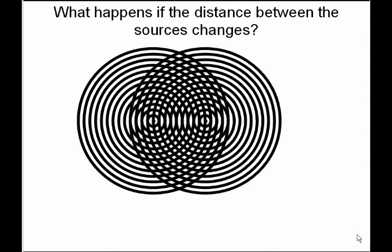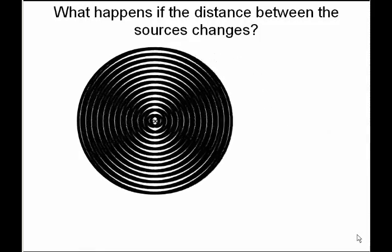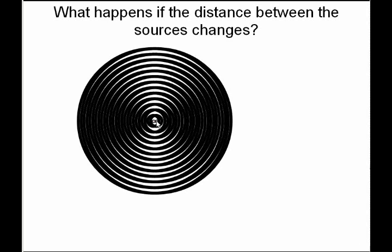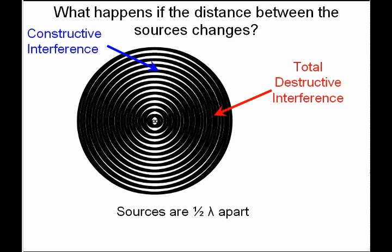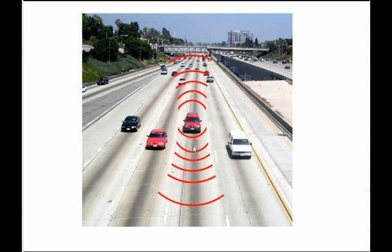If we have two different sources and move them, we can see that the interference pattern changes. When we get near the end, there is a spot where the sources are a half wavelength apart, giving us nothing on the two sides and one big constructive interference on the top and bottom — on the sides it's total destructive interference. CB radios on trucks use this: they have an antenna on the left side and the right side of the cab or bumper, and the distance between them is half the wavelength of the CB radio wave. This gives them the interference pattern so they can talk to people in front and behind them on the freeway, sending waves twice the distance forwards and backwards using the same amount of energy.